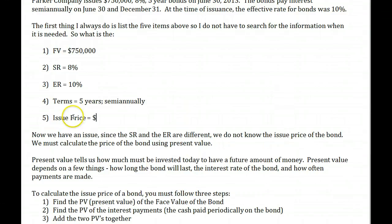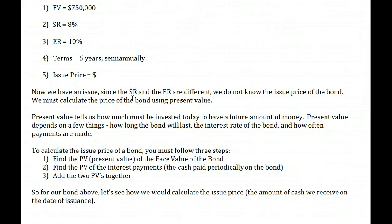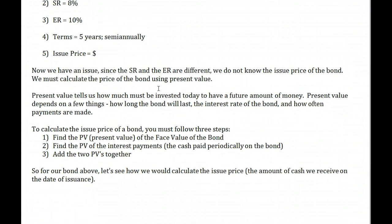In order to calculate the price of a bond, we must use present value. Present value tells us how much must be invested today to have a future amount of money. Present value depends on how long the bond will last, the interest rate of the bond, and how often payments are made. To calculate the issue price of the bond, we follow three steps: find the present value of the face value, find the present value of the interest payments, then simply add the two present values together.